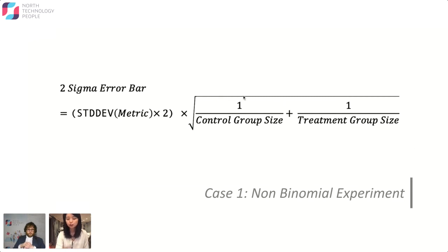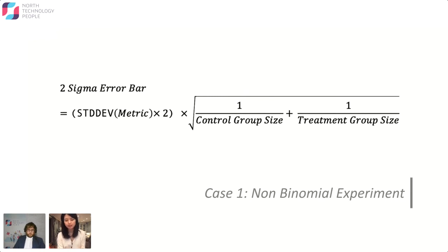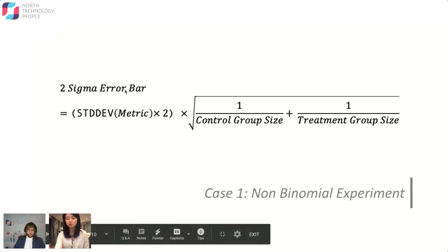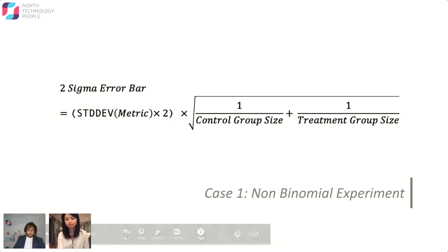Here you have the control group size and the treatment group size. Most often in A/B tests we split 50/50. However, in this case, because we want to show the offer to as many Drop users as possible, you might do a 90/10 or 80/20 split — whatever it is. You can play around with the split and compare your error bar with your expected value. The rest of the experiment is very similar to any standard one.